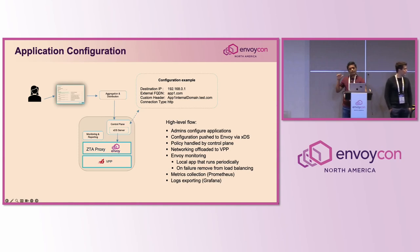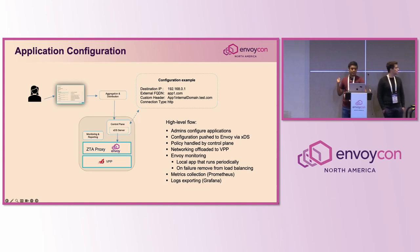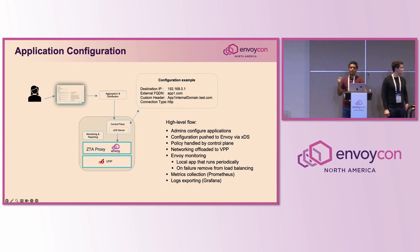Networking is done by VPP and Envoy runs on top of VPP. We monitor our Envoy with a local health check app running every couple of seconds. If the Envoy node is not healthy, we take it out of rotation. We use Prometheus for scraping and all logs are pushed to Grafana.